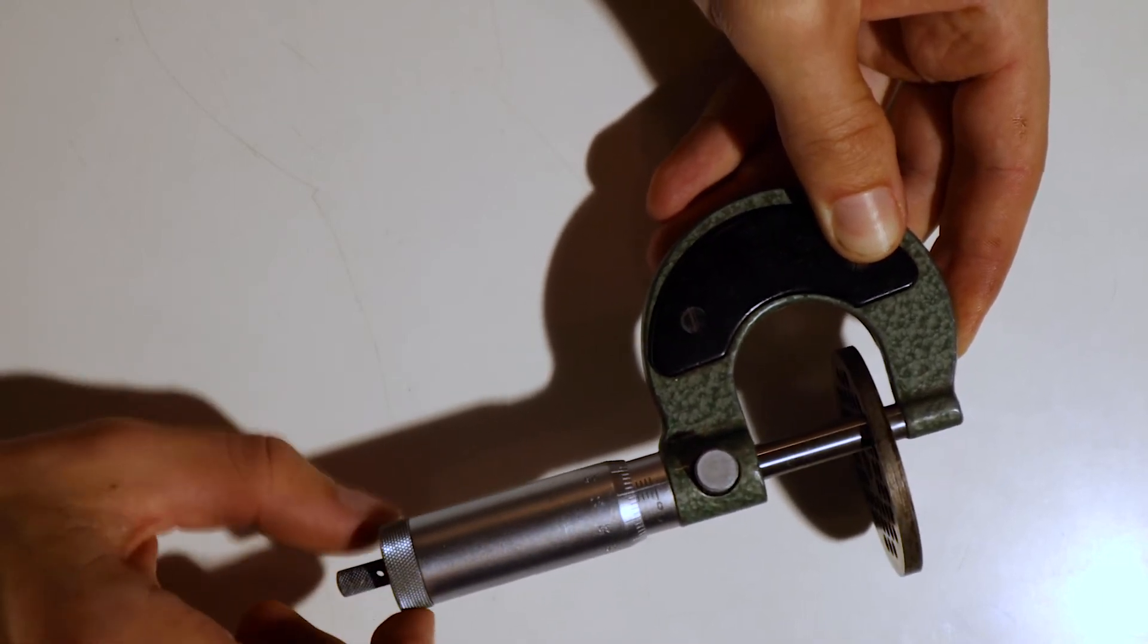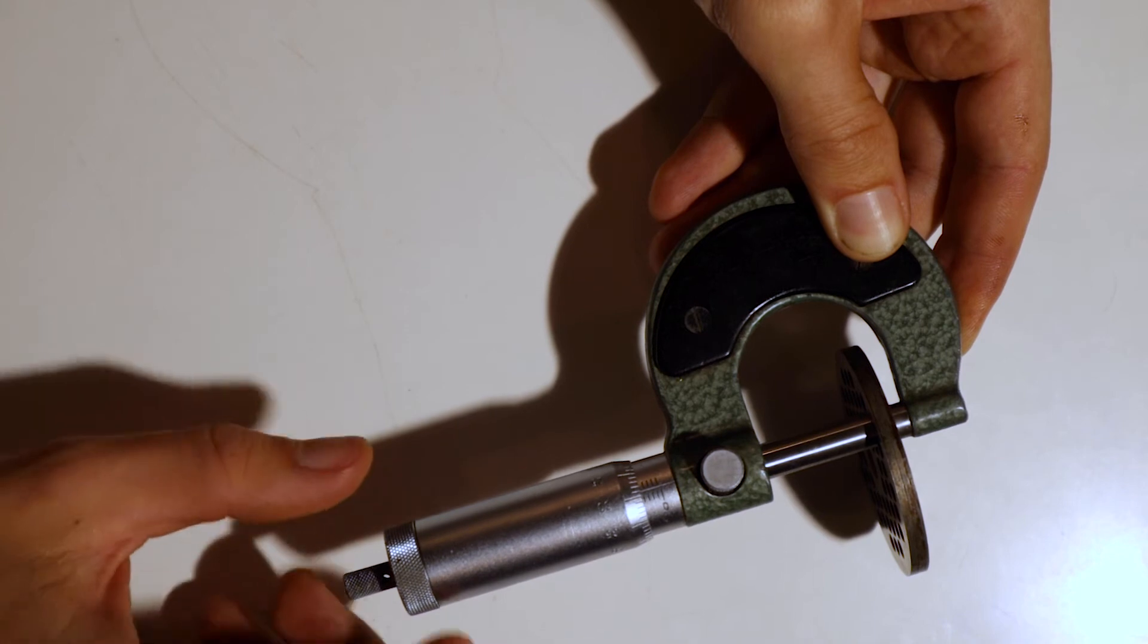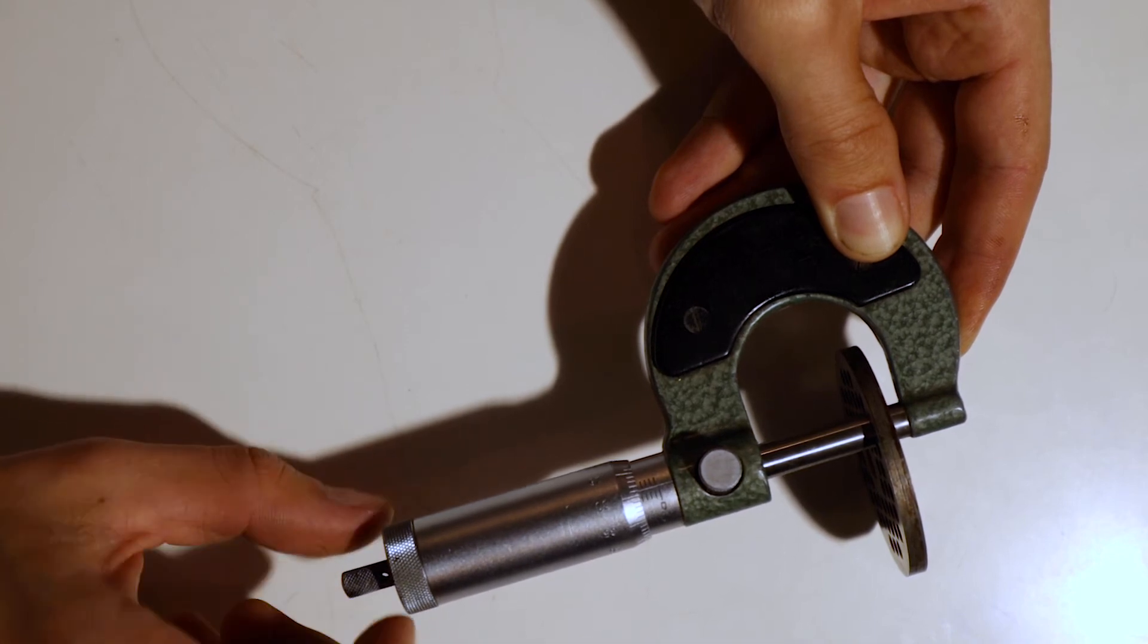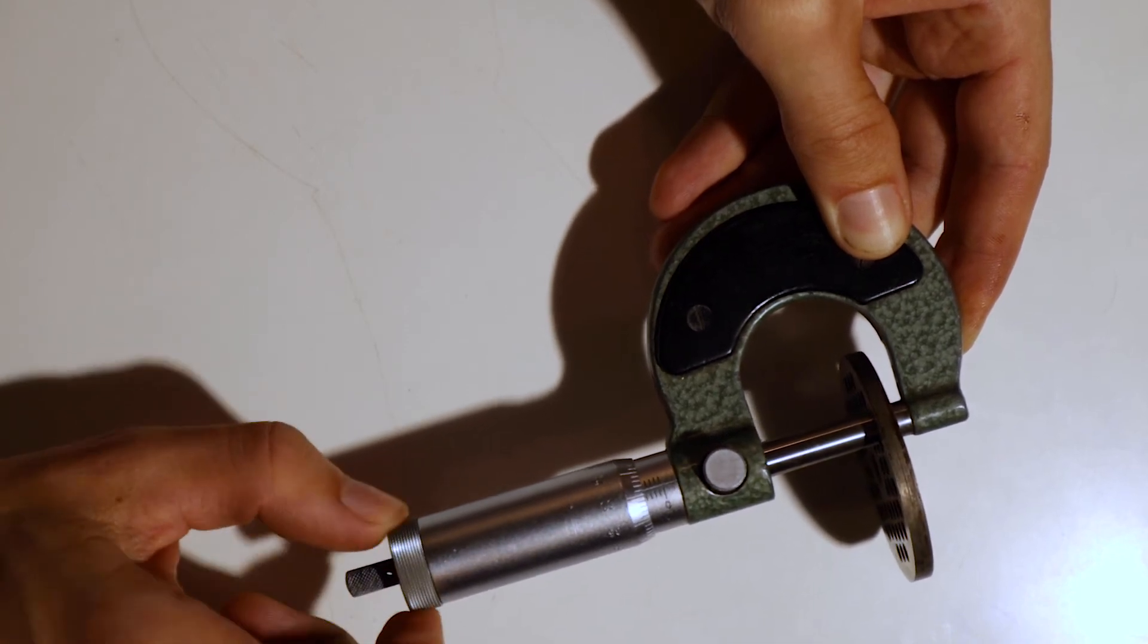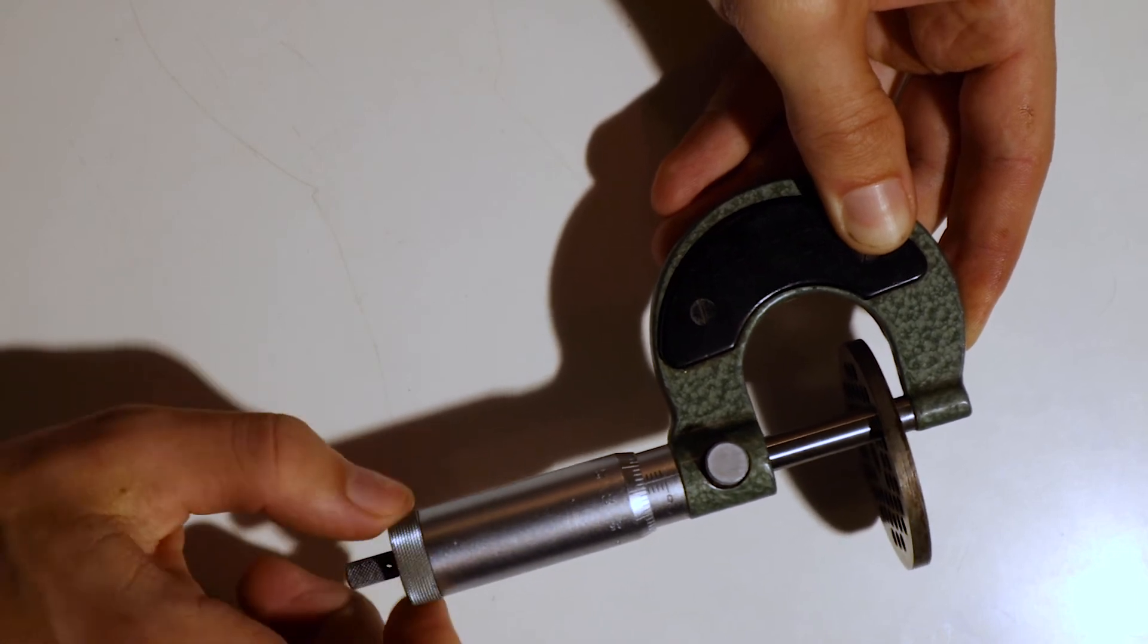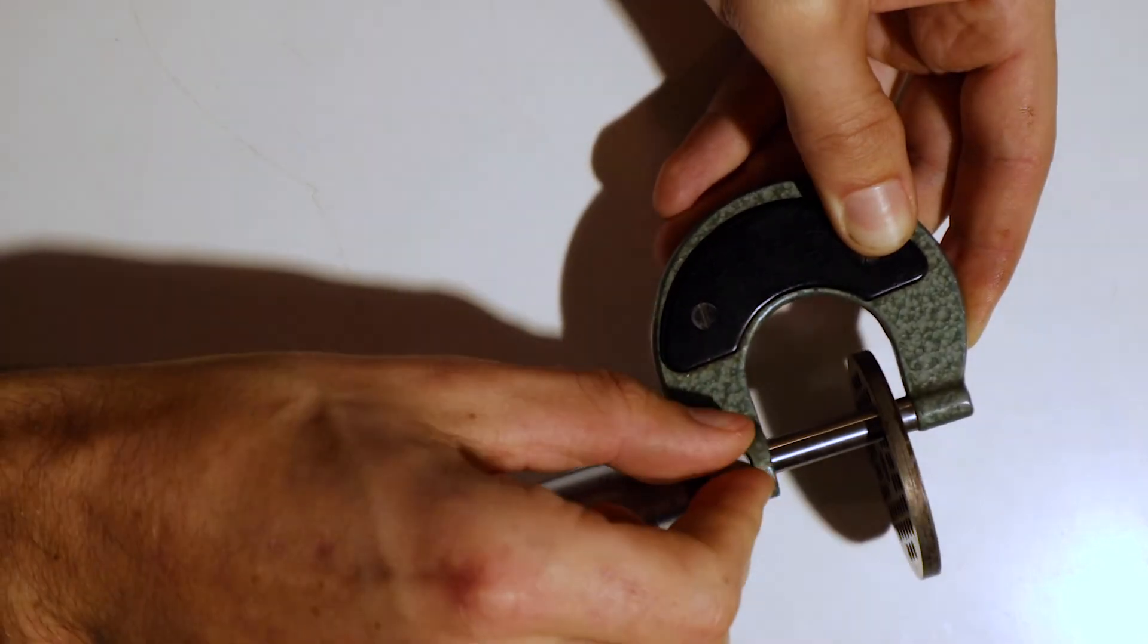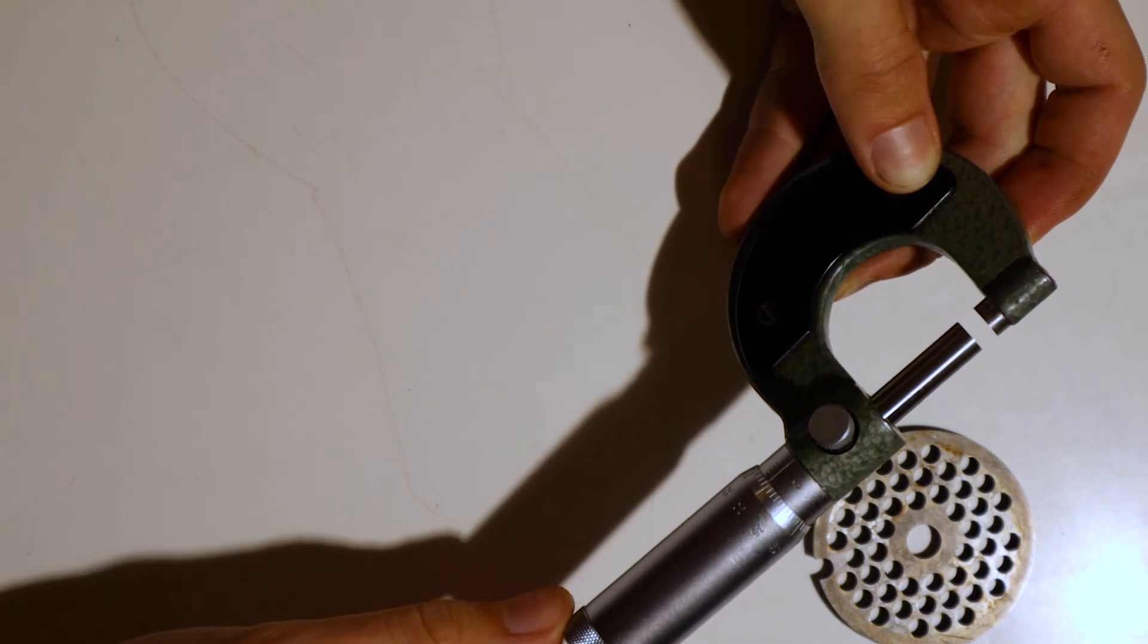When I'm close I'm going to use this ratchet which ensures the force is going to be the same all the time and I'm just going to rotate it like two or three times. Then I'm going to lock it with the locking nut and now I can take a measurement.